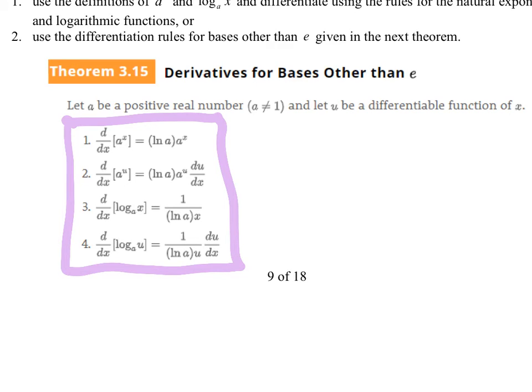If you take the derivative of 2 to the x, it's 2 to the x times the natural log of 2. So the only thing new in all of these formulas is you just multiply by the natural log of the base. It's literally nothing new. Everything's the same.